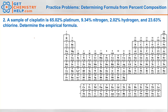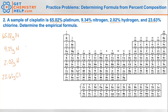In our next practice problem, it says a sample of cisplatin, which is an anti-cancer drug, is 65.02% platinum, 9.34% nitrogen, 2.02% hydrogen, and 23.63% chlorine. What is the empirical formula? Same thing — we assume 100 grams, so that means 65.02 grams of platinum, 9.34 grams of nitrogen, 2.02 grams of hydrogen, and 23.63 grams of chlorine.